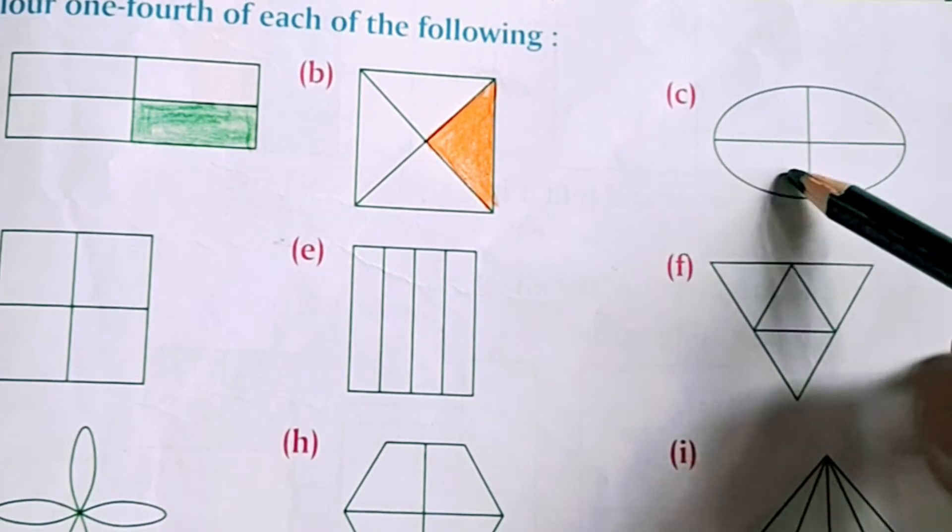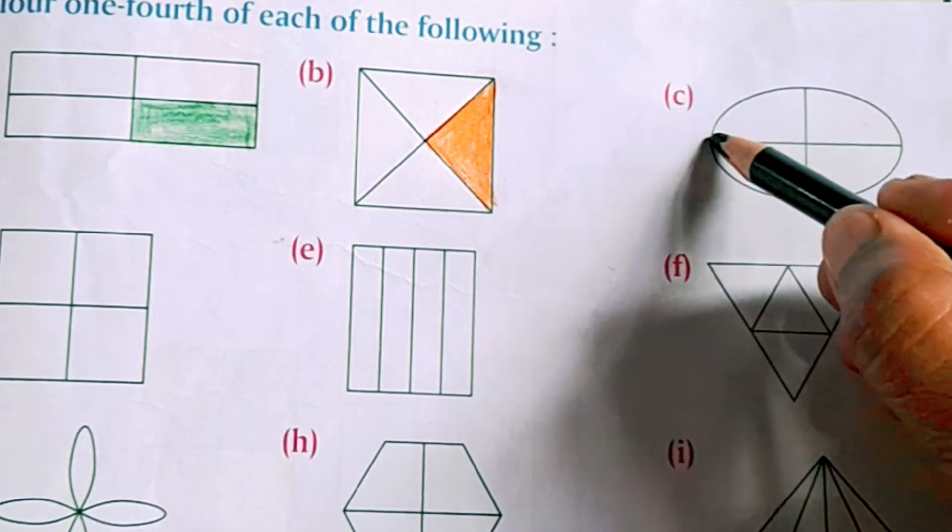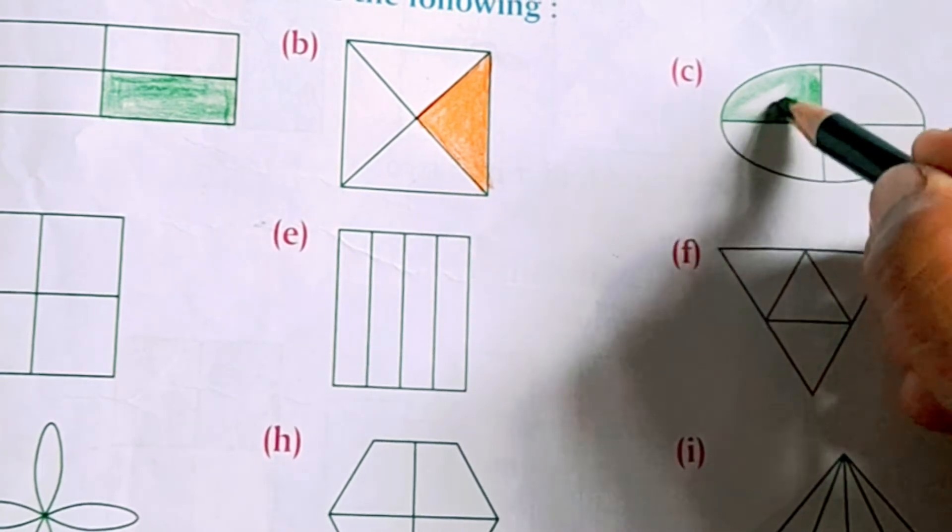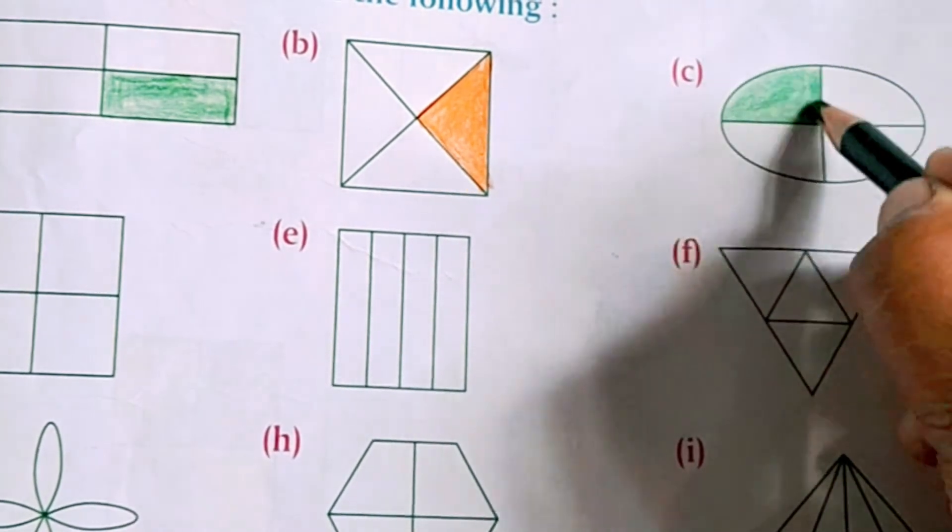In the next diagram we have an oval. Again let us color one part of the oval to show one-fourth.